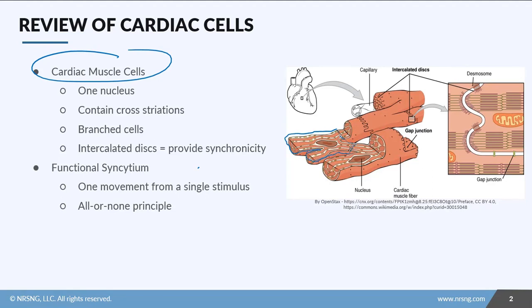You'll note that it has only one nucleus and it contains cross striations. The other thing about it is it's branched — there's one branch here and another branch here. This allows them to get together in an interlocking fashion. Cardiac muscle cells also have these things called intercalated discs, and they provide synchronicity across all the cells.